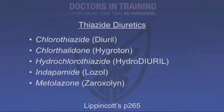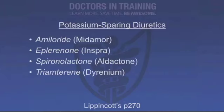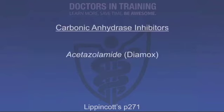The distal convoluted tubule is the primary site of action of the fourth class — the thiazides — exemplified by chlorothiazide, chlorthalidone, hydrochlorothiazide, indapamide, and metolazone. And finally, when we enter the collecting tubule, we talk about the potassium-sparing diuretics: amiloride, eplerenone, spironolactone, and triamterene.